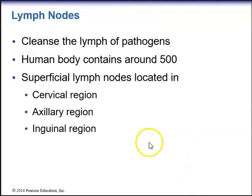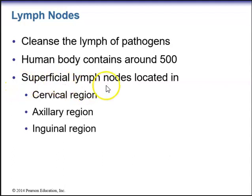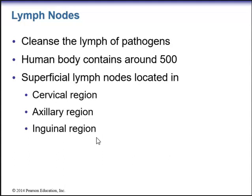Lymph nodes located along collecting lymph vessels help cleanse the lymph of pathogens. The human body contains around 500 lymph nodes. We can palpate superficial lymph nodes in the cervical region (neck), the axillary region (armpit), and the inguinal region (groin). If we palpate enlarged or hardened lymph nodes, that could be a sign of underlying pathology or infection.